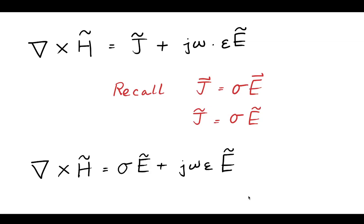So, if you have that, you can then replace this J term with a sigma E term. And now, we have two E fields, two electric fields, on the right-hand side.